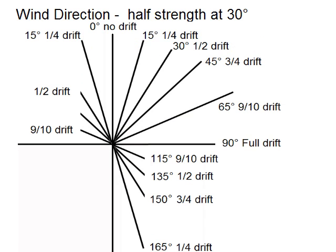Wind direction — this is complicated stuff. You'd think that at 45 degrees there'd be half the deflection, but there isn't — it's more than that, it's about three quarters. You only get half the deflection at 30 degrees. So if it's 6 inches at 200 yards and the wind is coming directly from the left, that's the full 6 inches. At 45 degrees it's three quarters, and at 30 degrees it's half — so at 30 degrees it would be 3 inches, and at 90 degrees it would be the full 6 inches.